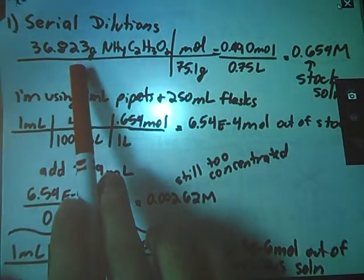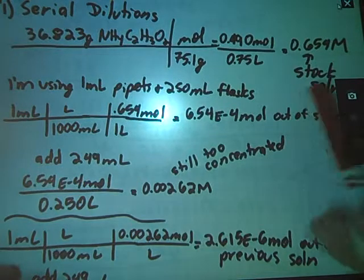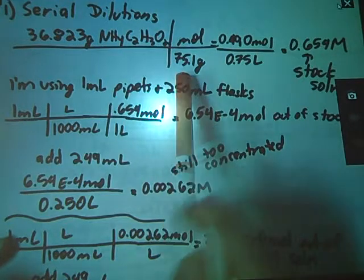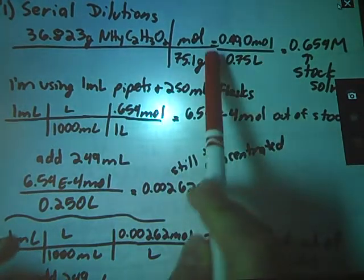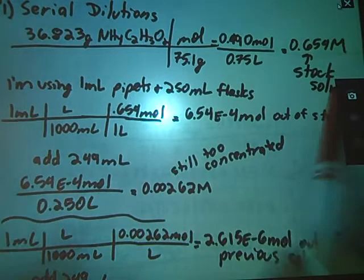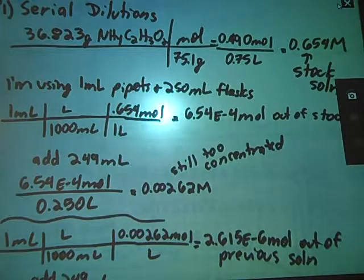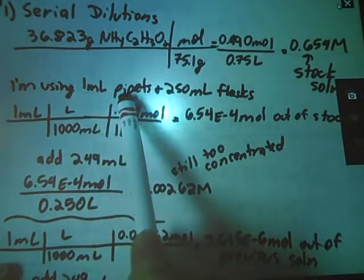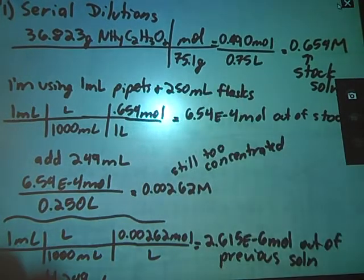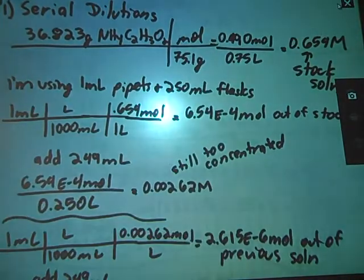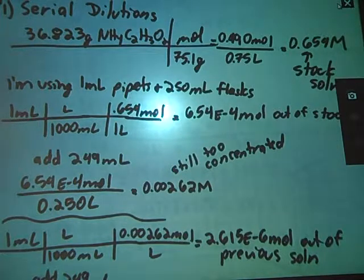So the first thing I did was calculate the molarity of my stock solution over here. So I took my grams of ammonium acetate, has a formula mass of 75.1, got my moles. This was the volume that they gave us. So my stock solution has a molarity of about 0.654. So I'm going to have to take some out of that and then dilute it down. I decided to use a 1 mil pipette and a 250 mil volumetric flask because I thought that by using a small pipette and a larger volume, I would be able to dilute down to that low concentration faster. If you chose to use a 5 mil pipette and a 100 mil flask, you would just use those volumes instead.